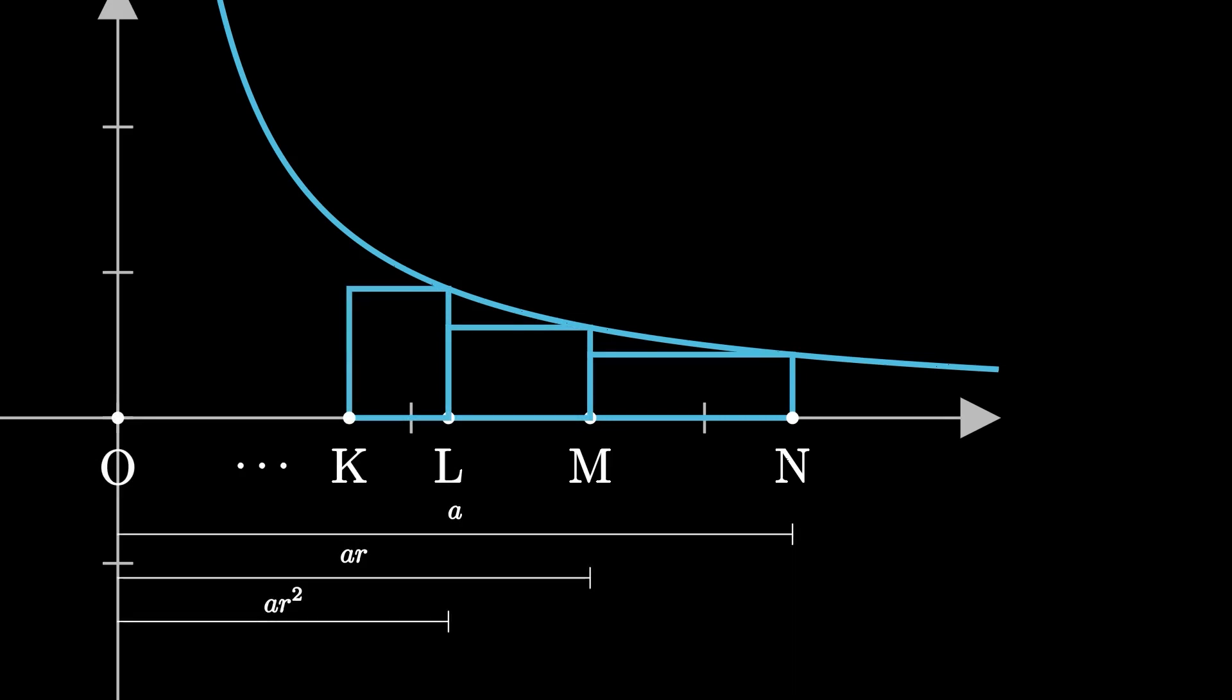the height of each point would be the distance to the negative first power. So the height at n would be a to the negative 1, or 1 over a. The height at m would be 1 over ar. At l it's 1 over ar squared, and so on. Now, the widths of the rectangles are the same as last time. Rectangle mn has width a minus ar, or a times 1 minus r. Rectangle lm has width ar minus ar squared, or ar times 1 minus r, and so on.